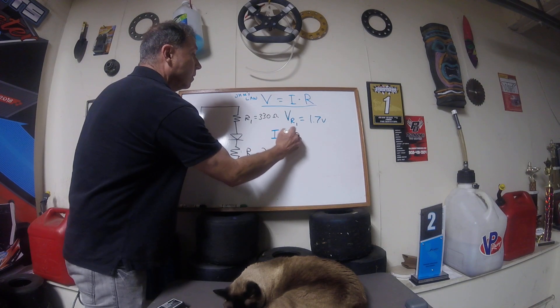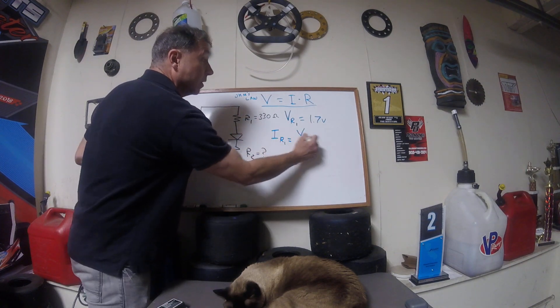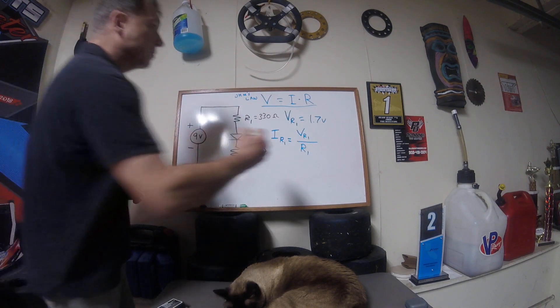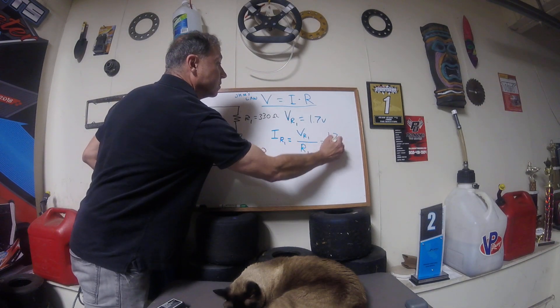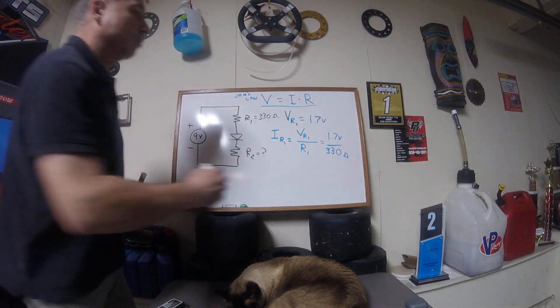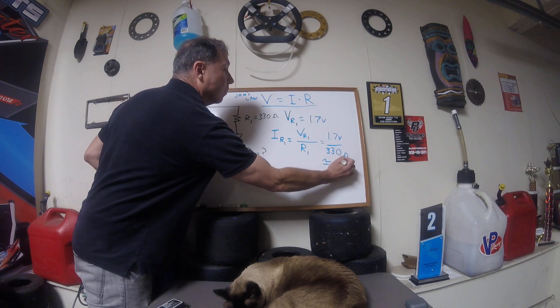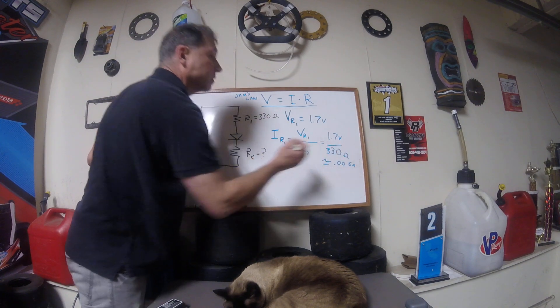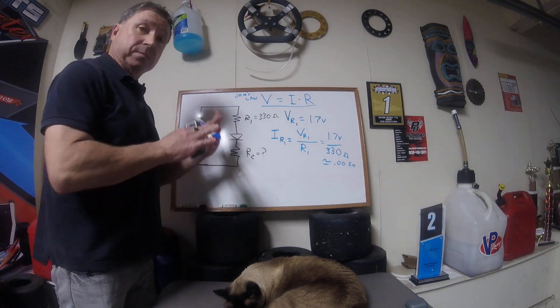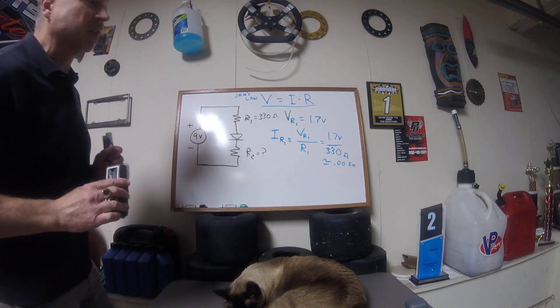So IR1, manipulate the formula, is equal to V across R1, specifically across R1, divided by the resistance R1, like so. We put in the values, 1.7 volts divided by 330 ohms, like so. And what we get is about, let's say about 5 milliamps, so 0.005. Approximating, just to quicken up the video a little bit, but might want to get a little bit more accurate than one significant figure like that.